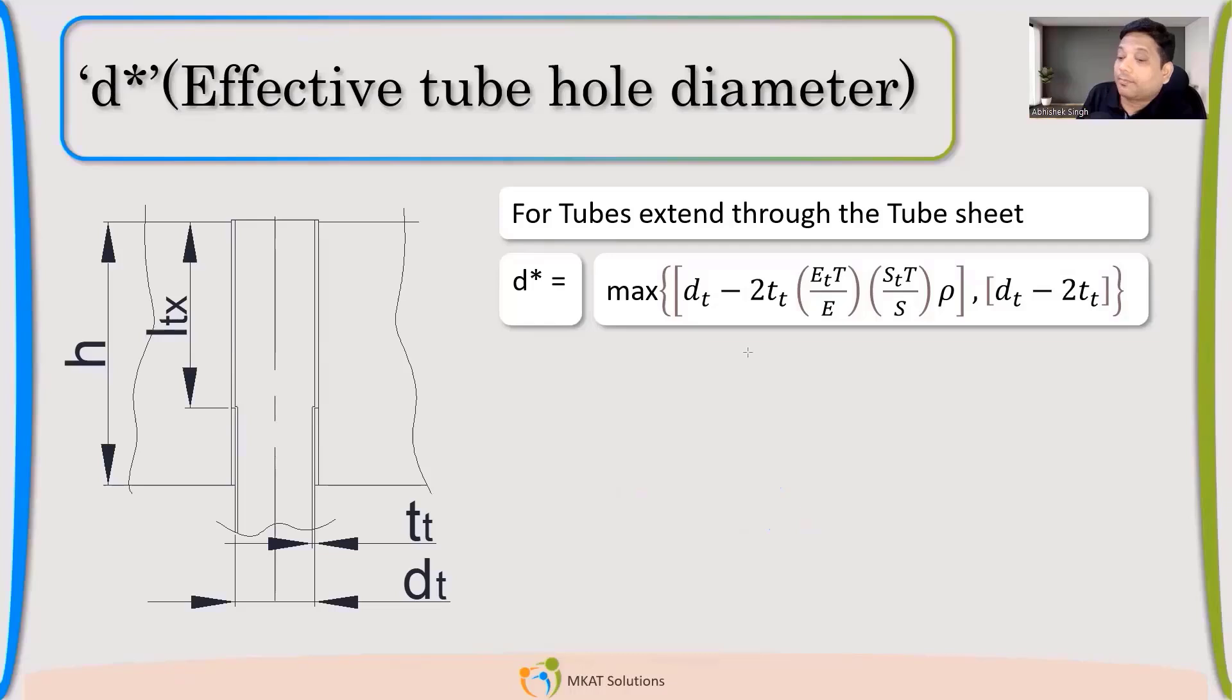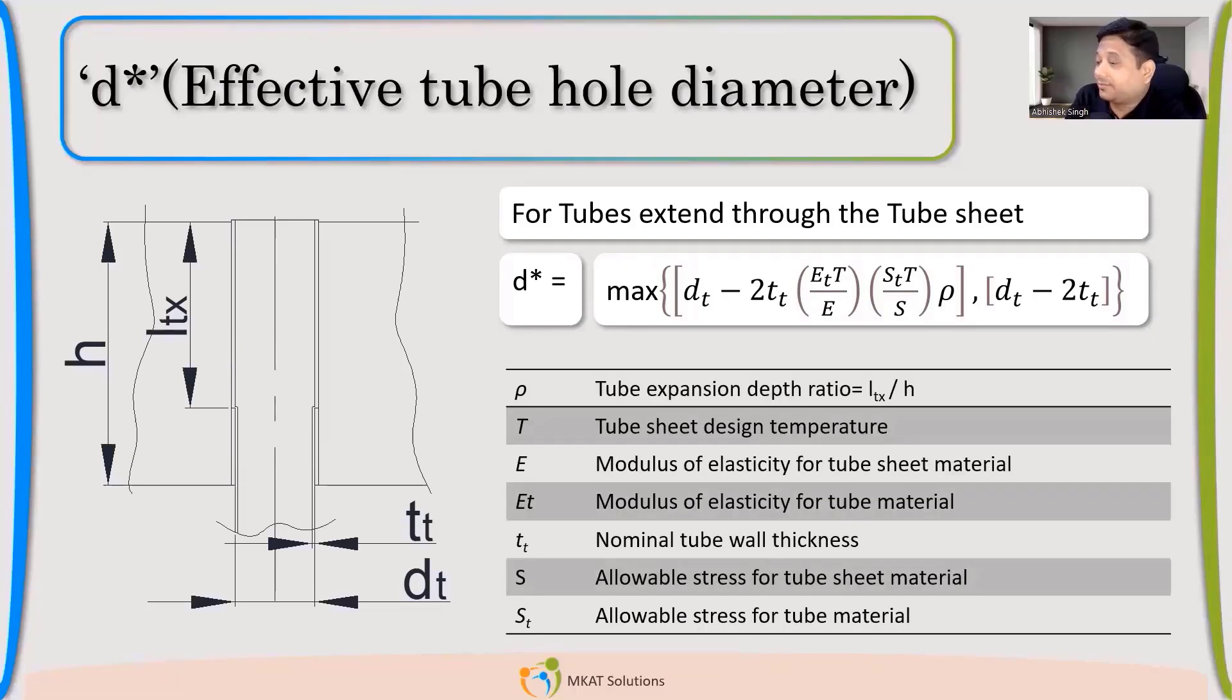So this is the formula for d*, which takes care of, if you talk about ET, your modulus of elasticity, S allowable, everything is taking part in calculation of d*, which is the effective diameter. So even your elasticity, modulus of elasticity, is also an important parameter to calculate that.